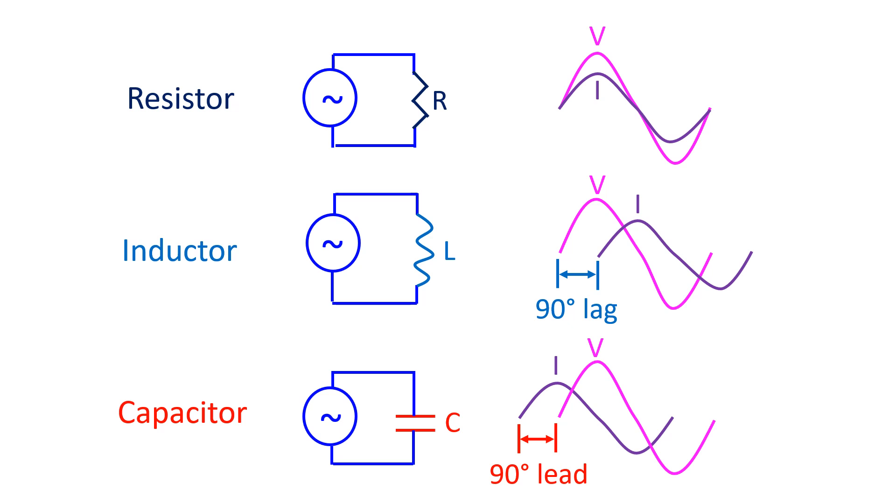In case of an ideal capacitor, it is the other way around, with the alternating current leading the voltage by a quarter cycle or 90 degrees. This is because of inhibitive effect of capacitance on change in voltage.